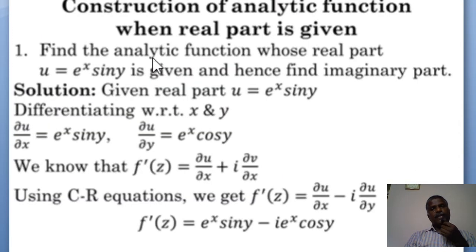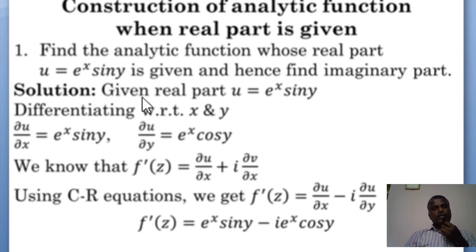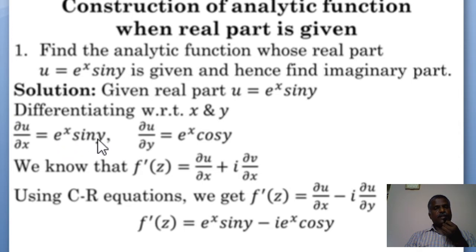First problem: find the analytic function whose real part u is equal to e^x sin y, and hence find the imaginary part. Here the real part is u = e^x sin y. Differentiating partially with respect to x and y, we get ∂u/∂x = e^x sin y and ∂u/∂y = e^x cos y. Differentiation of sin y is cos y, and differentiation of e^x is e^x.